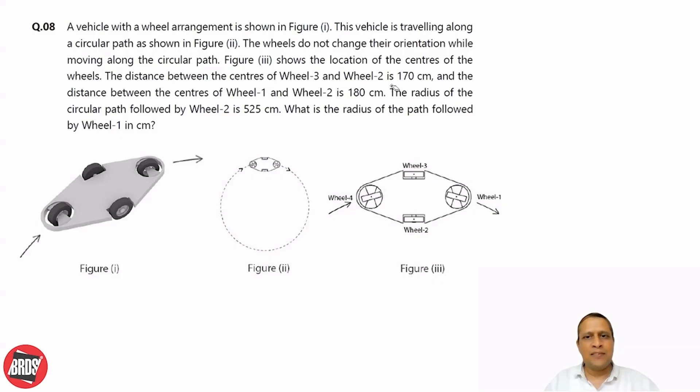Distance between center of wheel 3 and wheel 2 is 170. So wheel 3 and wheel 2, this distance from here till here is 170. If I cut it into half, this distance will be half of 170, which is 85. This distance is 85.